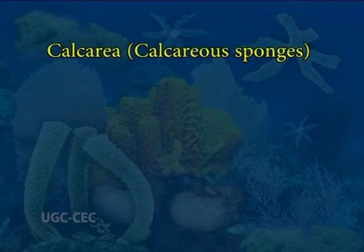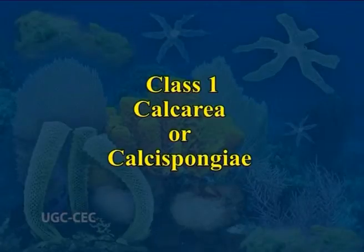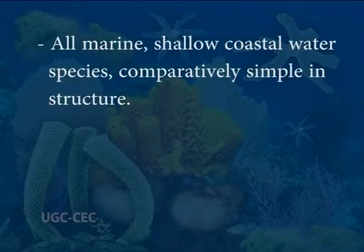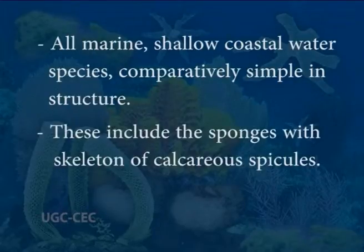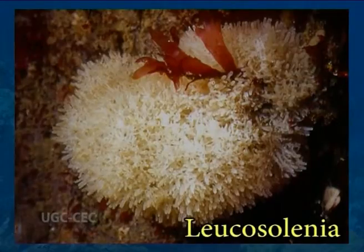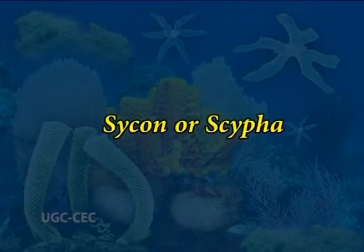Approximately 5000 living sponge species are classified in three distinct groups: the Calcarea (calcareous sponges), the Hexactinellida (glass sponges), and the Demospongiae. Class 1, Calcarea or calcareous sponges — in Latin calcareous means lime — are all marine, shallow coastal water species, comparatively simple in structure. These include sponges with a skeleton of calcareous spicules. Examples are Sycon, Leucosolenia, Clathrina, Scypha, etc.